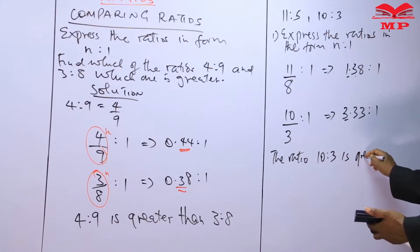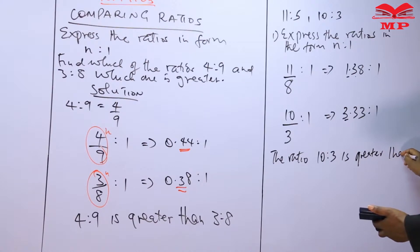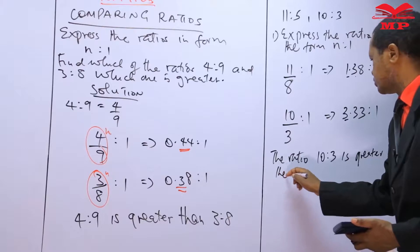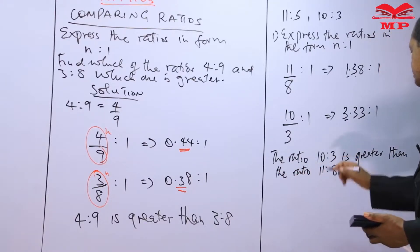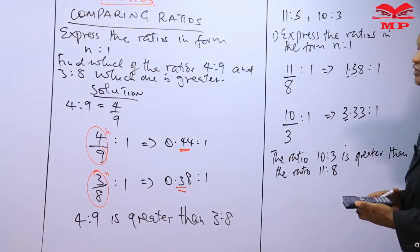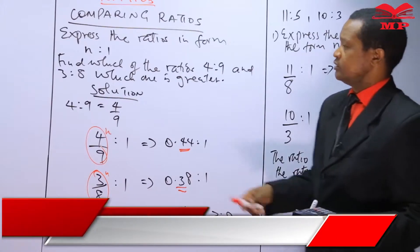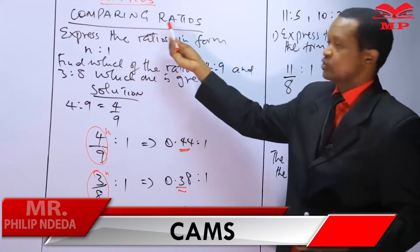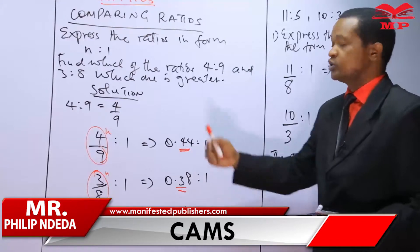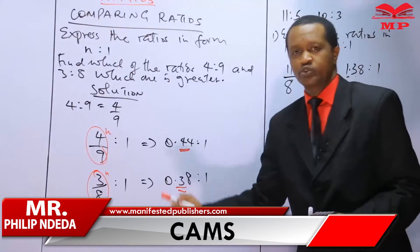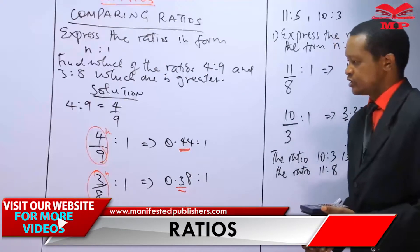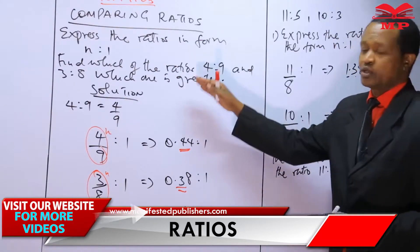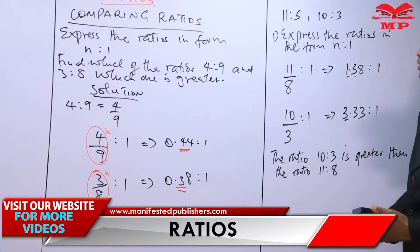The ratio ten to three is greater than the ratio eleven to five. That is how you can compare ratios using this method. If you have several ratios — two, three, or four — regardless of the number, that procedure has to be followed. This is only one way in which ratios can be compared.